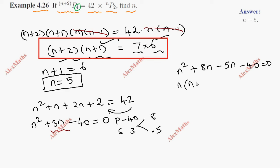Taking n common from the first two terms: n(n+8). From the second two terms: -5(n+8) equals 0. Factoring: (n+8)(n-5) equals 0.